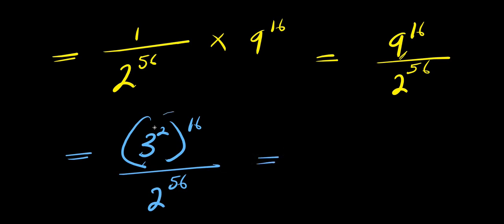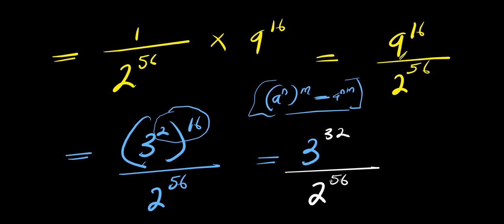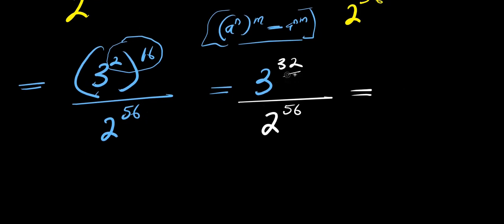Applying (A^N)^M = A^(N×M) again, we get 3^(2×16) / 2^56 = 3^32 / 2^56. We then express 32 as 4 × 8, and 56 as 7 × 8, giving us 3^(4×8) / 2^(7×8).